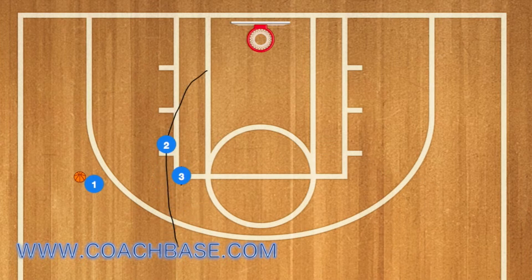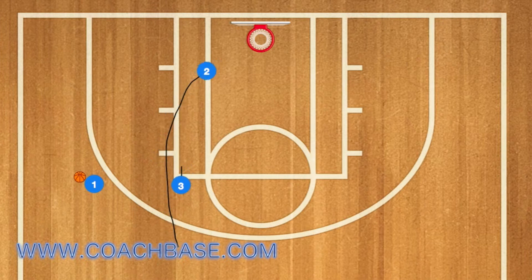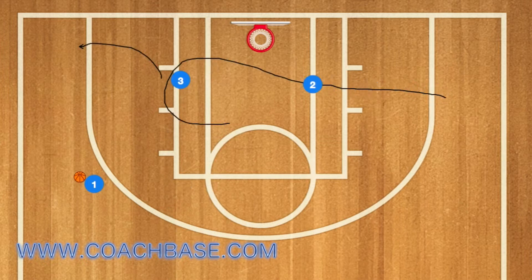Next is the UCLA cut, or what you can also call the UCLA screen. Three would screen for two at the free throw line. Two would use three as a screen and cut towards the rim.